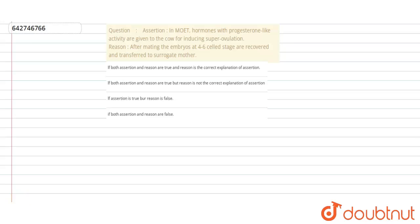The question is about assertion and reason. Assertion is: In MOET, hormones with progesterone-like activity are given to the cow for inducing super ovulation. Reason is: After mating, the embryos at four to six cell stage are recovered and transferred to the surrogate mother.